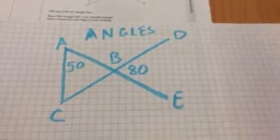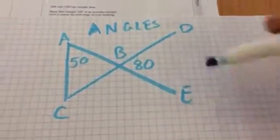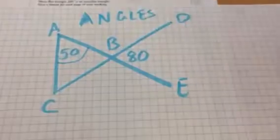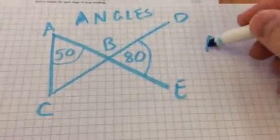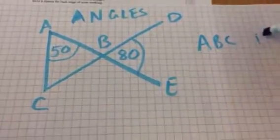So I've just redrawn it for a bit of clarity. ABE is a straight line. That angle there is 50. This angle here is 80 and we've got to show that ABC is isosceles.